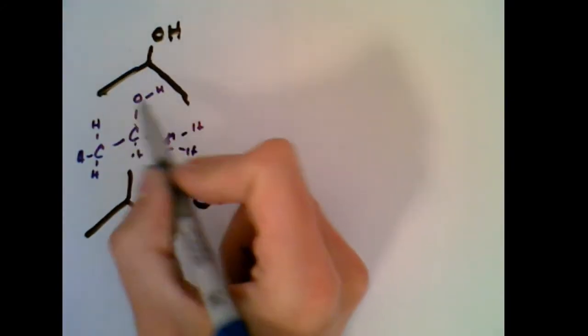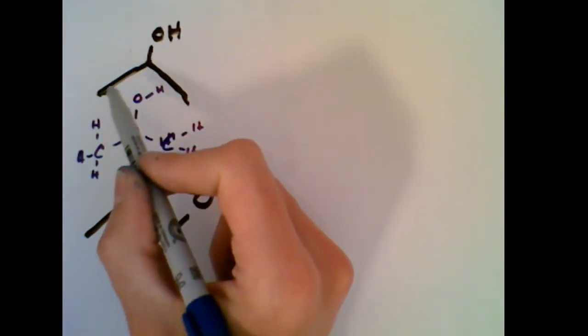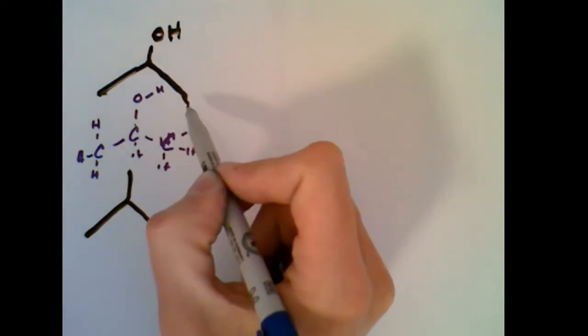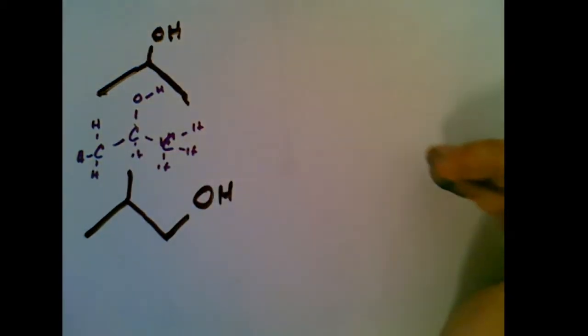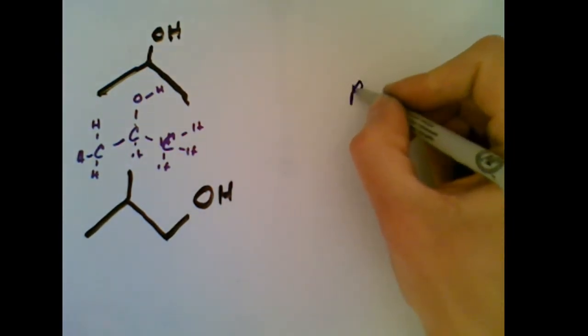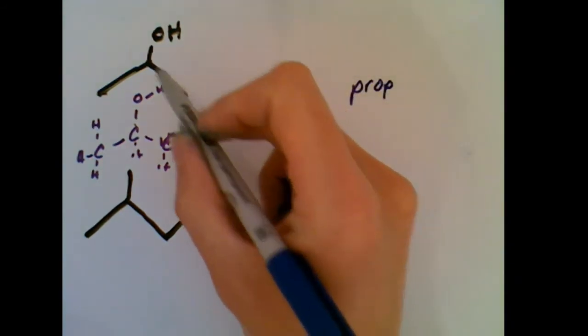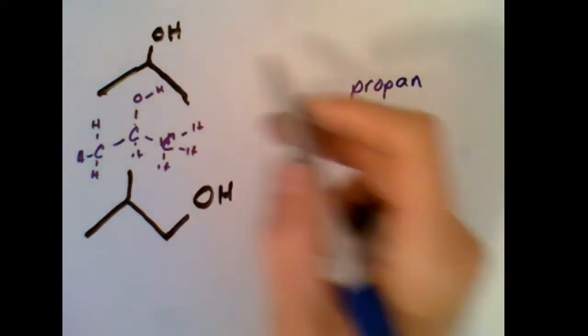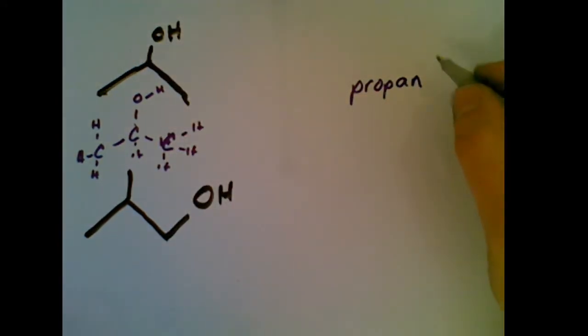Now when we are going to name this, we need to find the longest continuous chain with the OH group. So that's this one right here, three carbons. So three carbons is going to be called prop. The single bonds that connect them tell us it's a type of propane. But having this OH means instead of an E, I'm going to add OL.